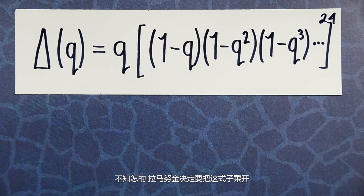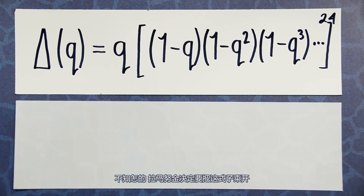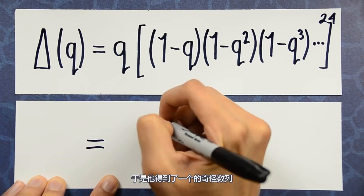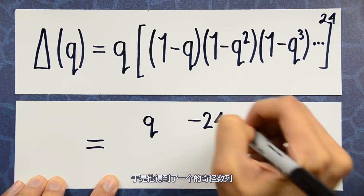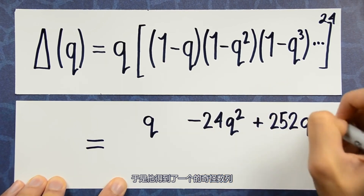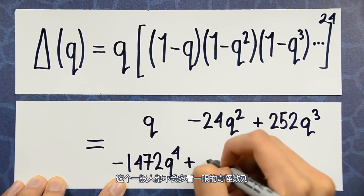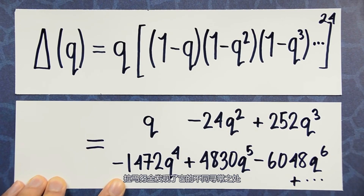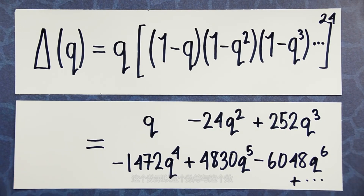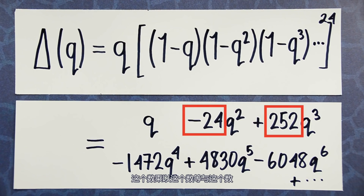For no particular reason, he decided to multiply it out. And when he did, he got this strange sequence of numbers. While most people wouldn't have looked twice at this list, Ramanujan noticed something very strange: if you took this number and multiplied it by this number, it equaled this number.